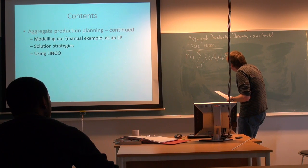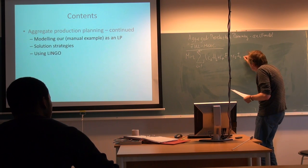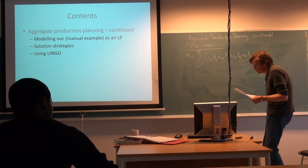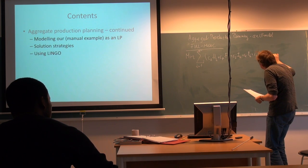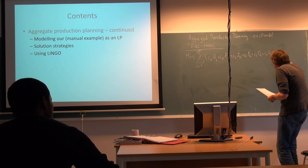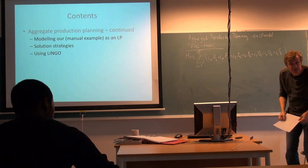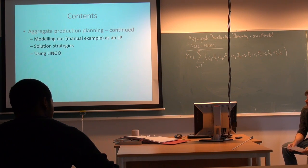Then there is some inventory which produces costs, and then there is CK times PT, the total production cost. Then there might be some overtime, COOT, plus potentially some undertime, and finally it may have some subcontracting. This is all our costs added together in each period over all periods. So that is the objective.